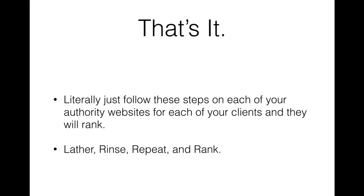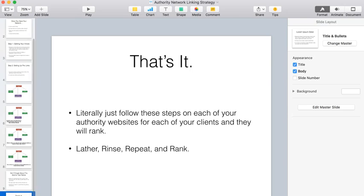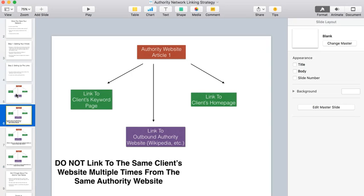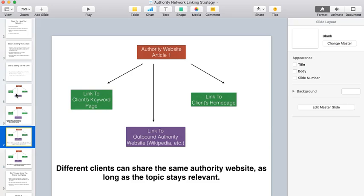This is it — just repeat these steps with each of your authority websites for each of your clients, and they're going to rank. Lather, rinse, repeat, and rank. I know things can get complicated, especially with this chart. If you have questions about the chart or how it's supposed to look, leave a comment in the group or shoot me a message — whatever you need to do to get this cleared up. We want you to understand this because this stuff really does work, and we are really trying to keep it as simple as possible. Let's see you in the next section.